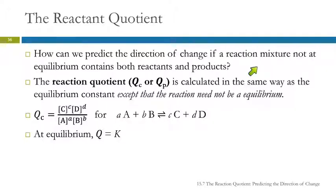So this is predicting reaction direction that's not at equilibrium. The reaction quotient is given the symbol capital Q. And just like we can have equilibrium constants in terms of concentration, moles per liter, or pressures of gases in atmospheres, we can do this with pressures or concentrations.